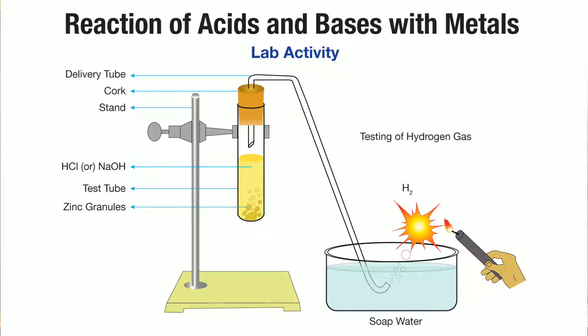By this activity, what do we observe? We observe that hydrochloric acid reacts with zinc granules and forms zinc chloride and hydrogen gas. We can confirm the hydrogen gas by bringing a burning matchstick near the mouth of the glass trough — the matchstick burns with a pop sound. This identifies the released gas as hydrogen gas, as we have already discussed in chemical reactions.